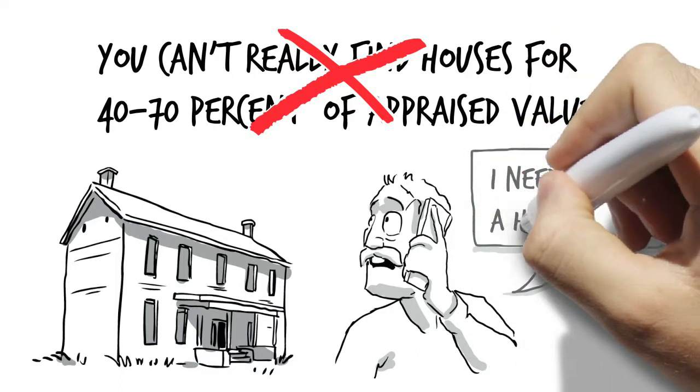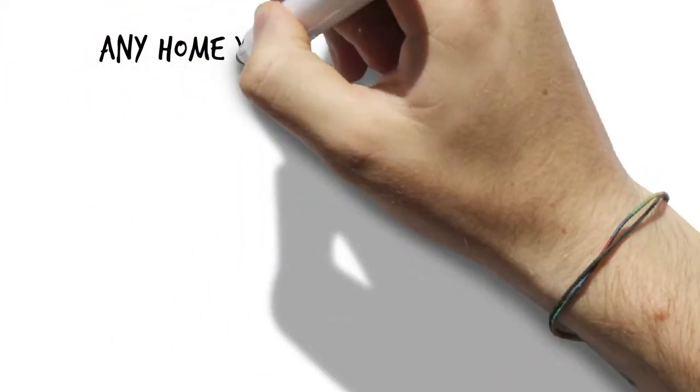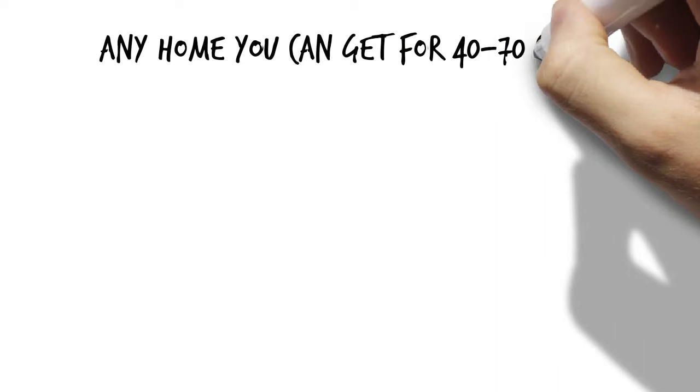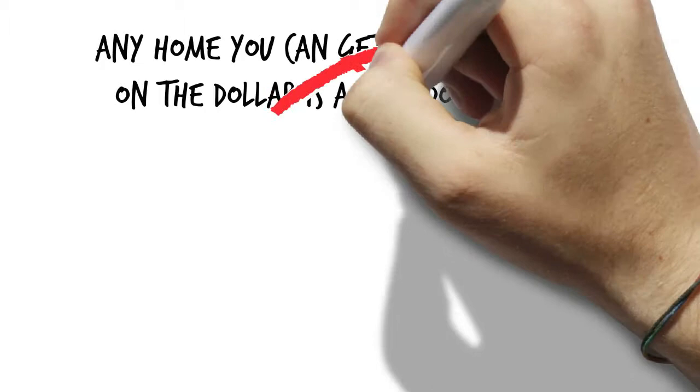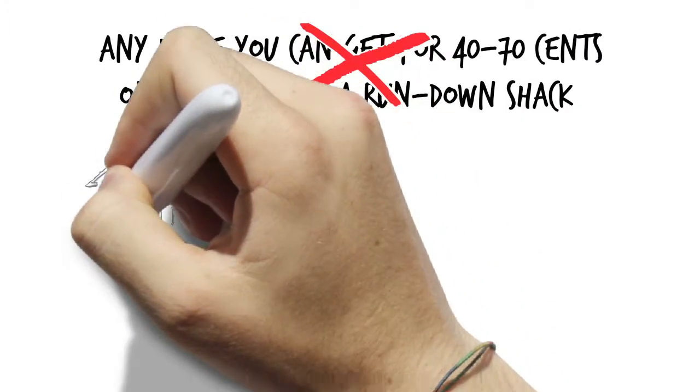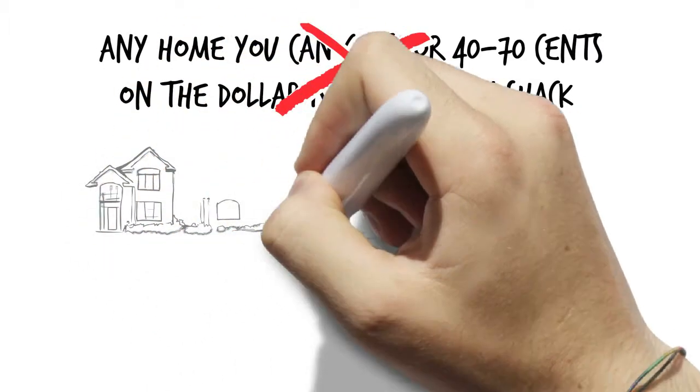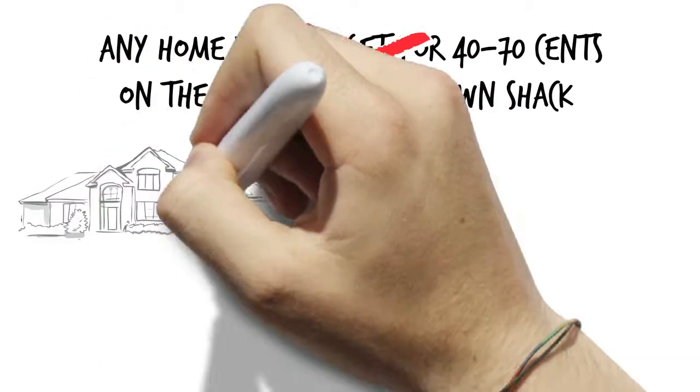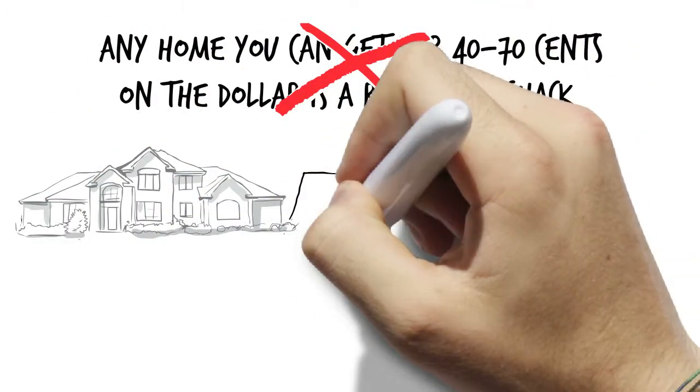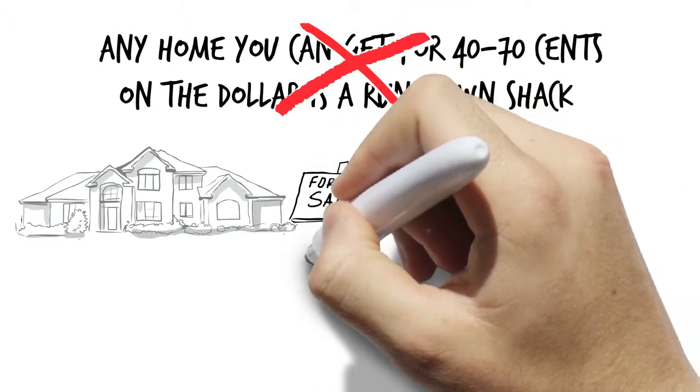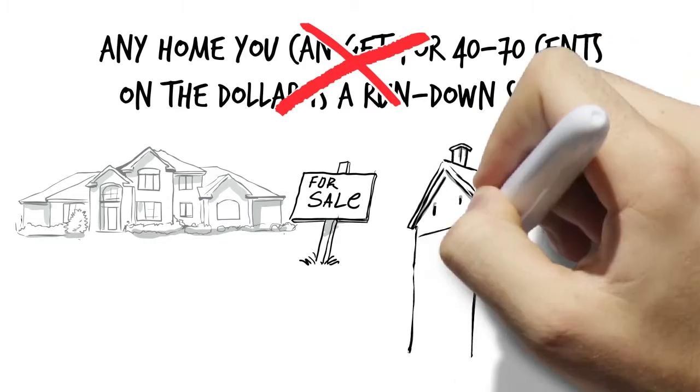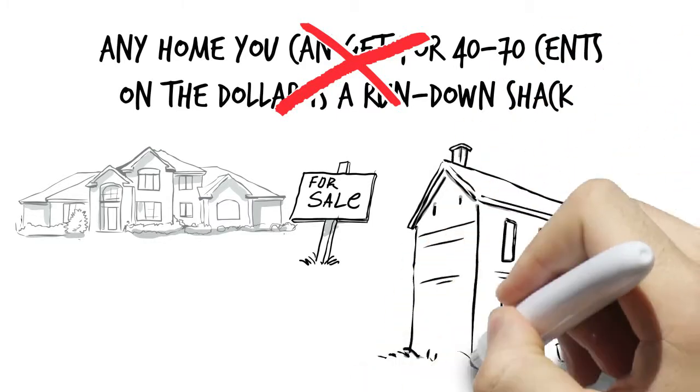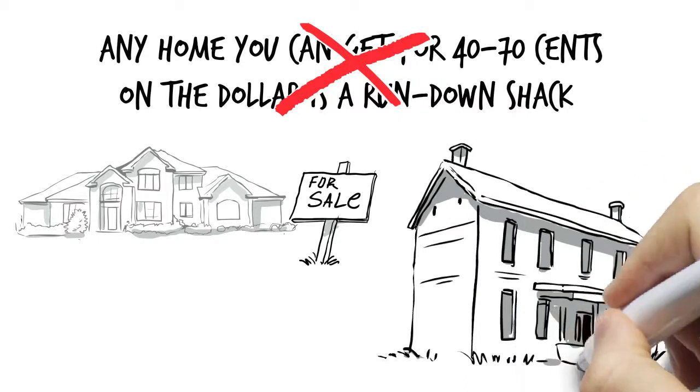Myth number two: you can't really find houses for 40 to 70 percent of appraised value. That is obviously false. In every market, yours included, there are dozens if not hundreds or thousands of homeowners who would love nothing more than to quickly get rid of the tax burden and liability of owning their houses because they're behind on payments, it's been willed in probate, it's an estate house they don't want, they've been relocated for their job, or a million other reasons. Myth number three: any home you can get for 40 to 70 cents on the dollar is a rundown shack. False. There are plenty of nice homes, even luxury homes, that people bought with subprime mortgages and now they're behind on their payments and they would love to sell. That being said, if you're only looking to sell the house and pocket a quick profit then who cares if it's a rundown shack? Fixer uppers are easier for the beginner to come by, they're much easier to resell because that's what landlords and rehabbers are actually looking for.